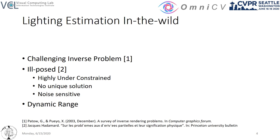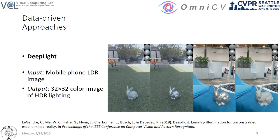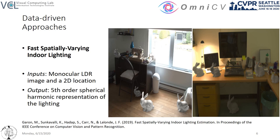Modern data-driven methods are a promising way to address challenging inverse problems. Deep Light regresses HDR lighting by estimating a low-resolution probe image from a single monocular low dynamic range image acquired by a mobile phone. Barron et al., on the other hand, offer localized estimates and regress a fifth-order spherical harmonic representation.